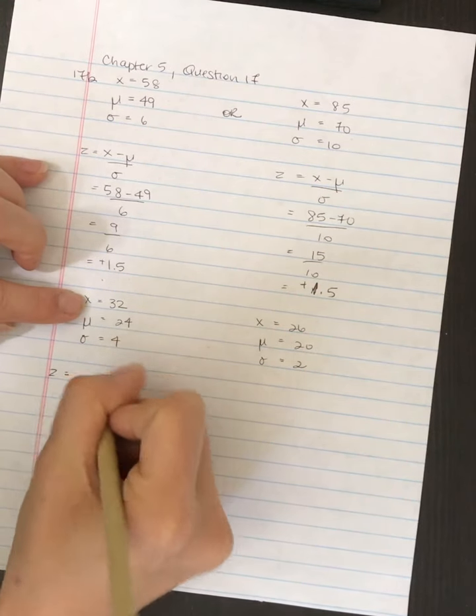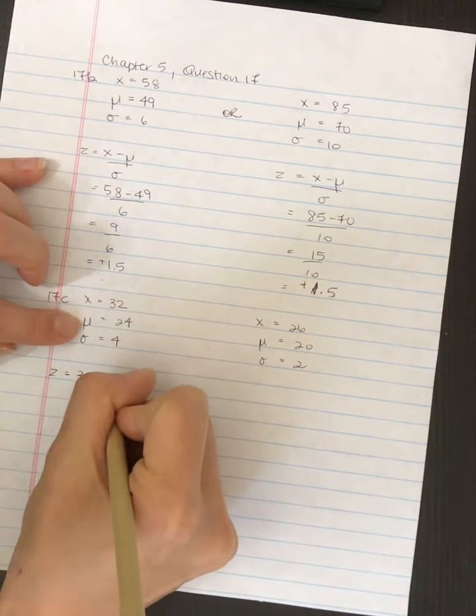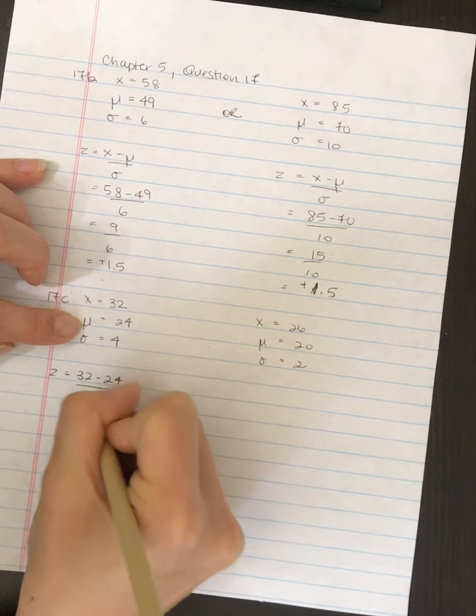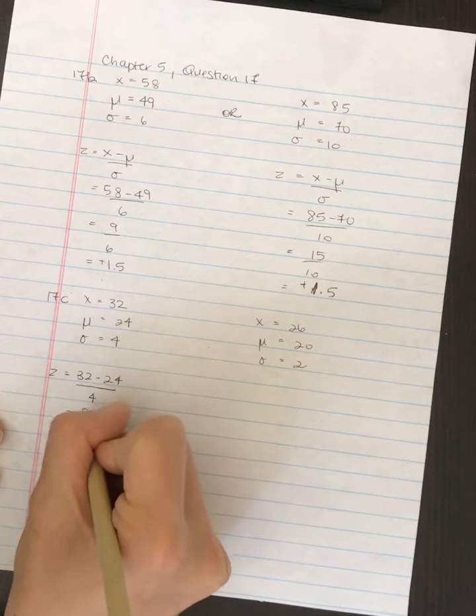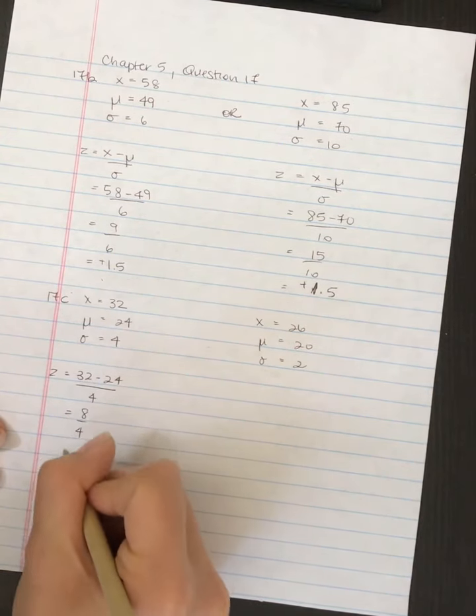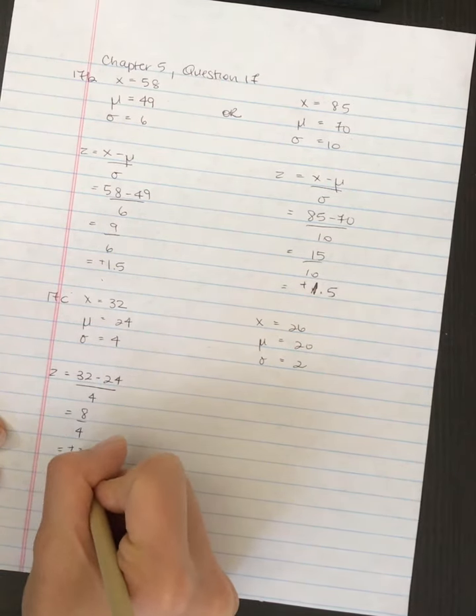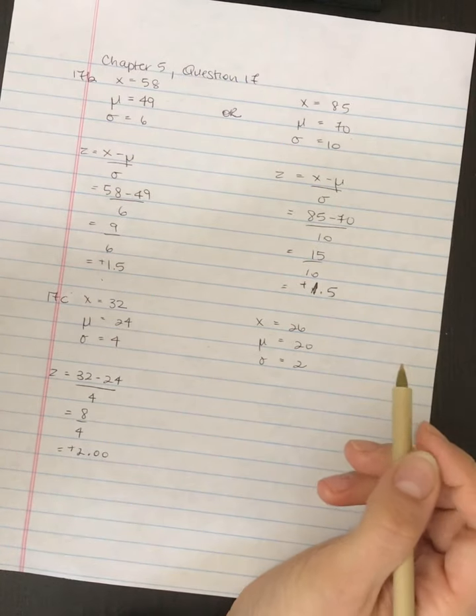So z is equal to 32 subtract 24 divided by 4. So that's equal to 8 divided by 4, which is equal to plus 2.00 for a z-score.